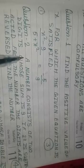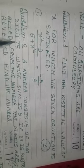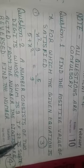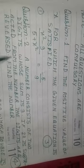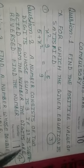Question Number 2. A number consists of two digits whose sum is 9. If 27 is subtracted from the number, the digits are reversed. Find the number. This question 4 marks.